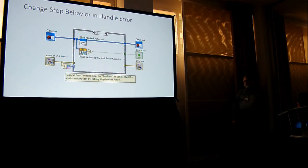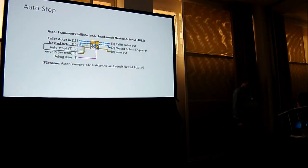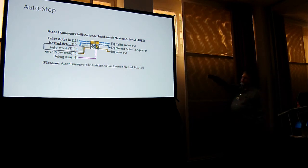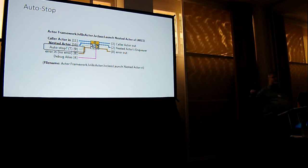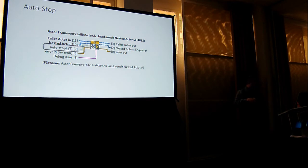In 2016 we got read autostop nested actor count, and it was part of something we got in 2014 — autostop. There is an optional input to launch nested — if autostop is true, which is the default, that incure automatically gets put on a list held internal to the actor base class. When you go to stop, the built-in stop functionality sends that broadcast for you. So you don't have to do this manually anymore.